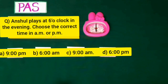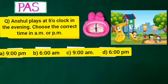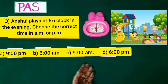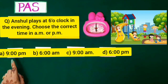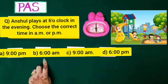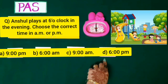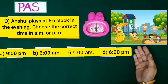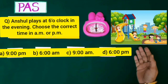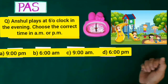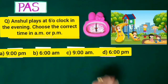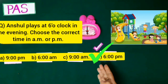Now it is time for a pass question. Anshul plays at 6 o'clock in the evening — choose the correct time in a.m. or p.m. Option A is 9 p.m., Option B is 6 a.m., Option C is 9 a.m., and Option D is 6 p.m. He plays in the evening, which is afternoon time, so we use p.m. He plays at 6 p.m. — Option D is the right answer.